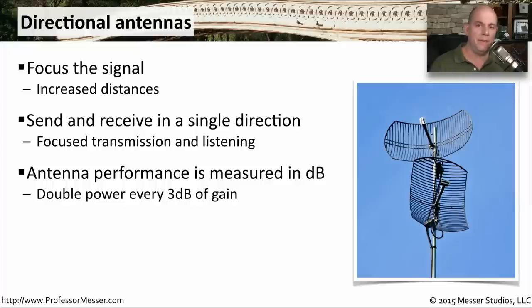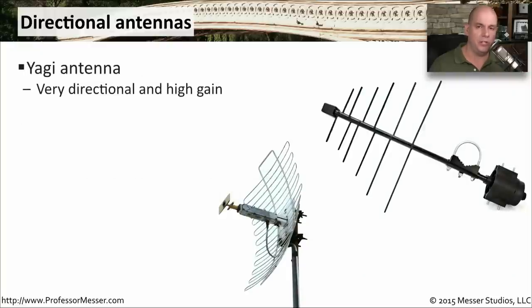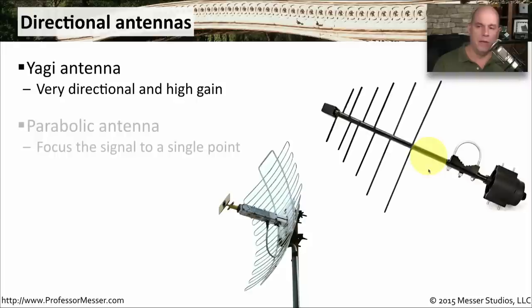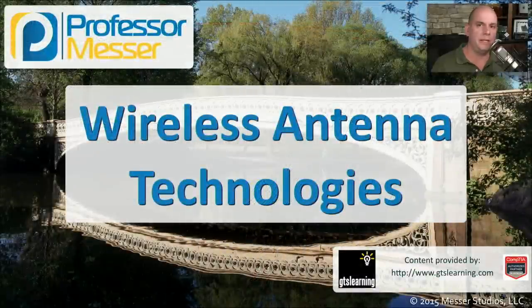To take advantage of this directionality, you'll need antennas specifically designed for direction. One is the Yagi antenna, which is a very directional antenna that gives you very high gain because you're really pinpointing the signal to one particular area. Another type is the parabolic antenna, which also focuses to a single point. You can see it has a rounded or curved area, and signals will bounce off that curve to a single feed horn, giving you a lot more control on where the signal is going and allowing you to focus on one particular area.